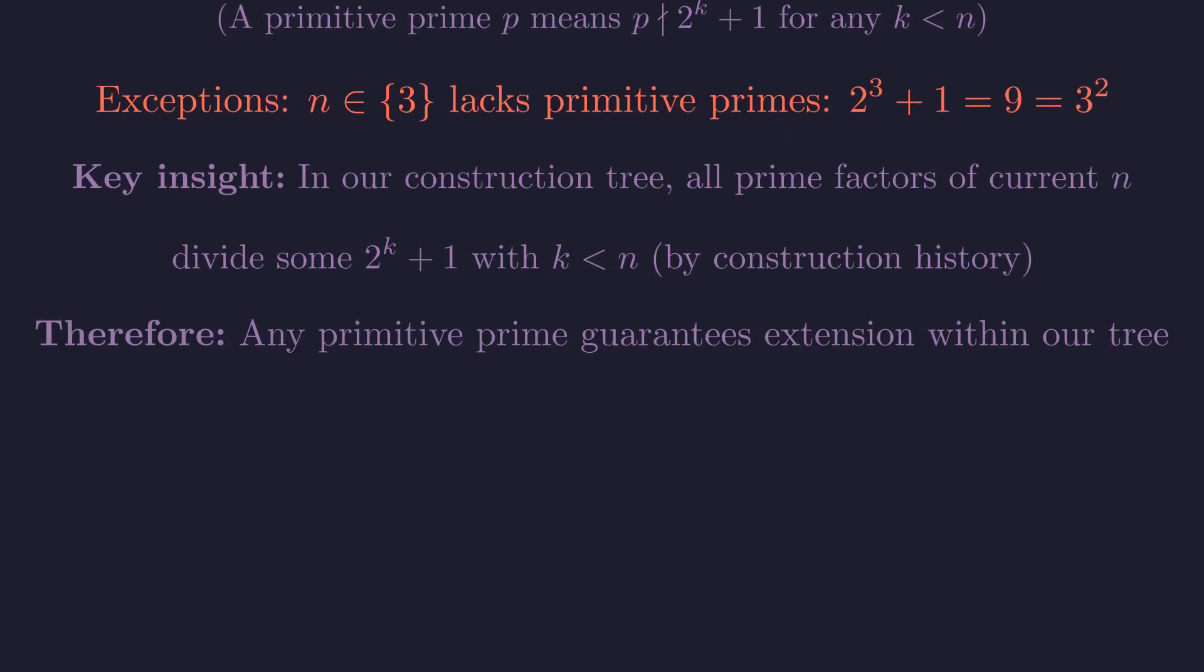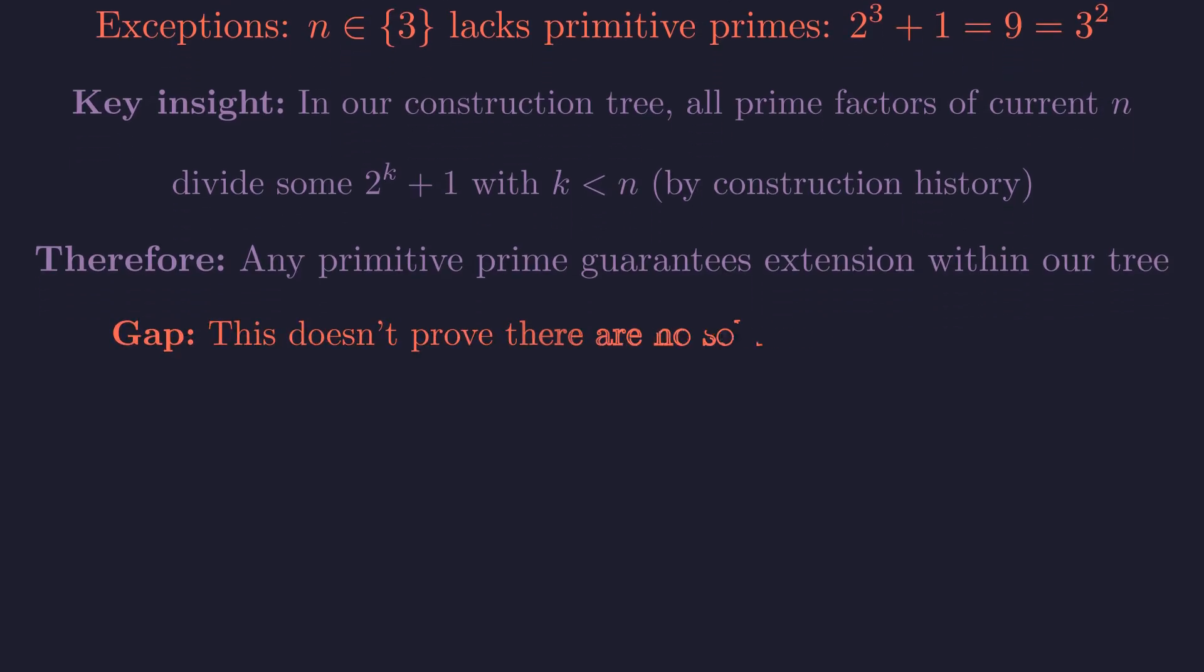Therefore, any primitive prime from 2 to the n plus 1, which by definition doesn't divide any smaller case, guarantees we can extend within our constructed tree. Critical gap. This reasoning doesn't prove there are no rogue solutions outside our construction tree. This remains the major open question.